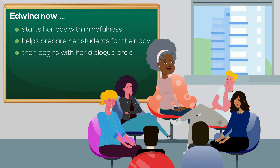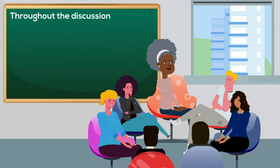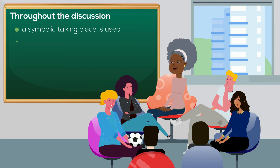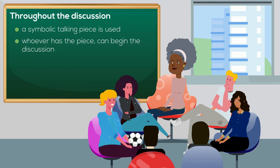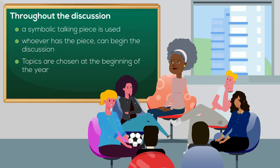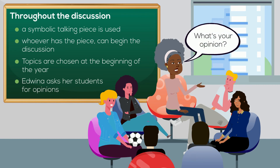In order to maintain order throughout the discussion, a symbolic talking piece is used — say, a ball — and whoever has the piece can take the floor and begin the discussion. Topics are generally chosen at the beginning of the year, and as the conversation evolves, Edwina asks her students for opinions.